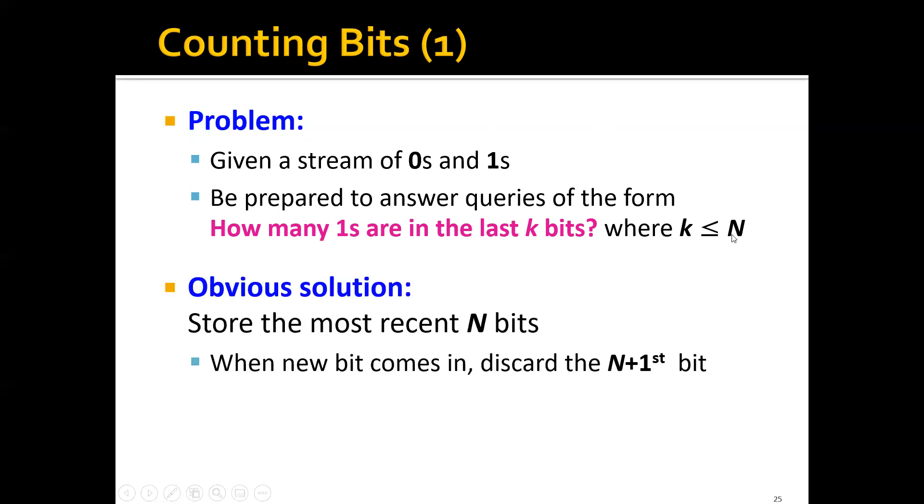The obvious solution is that we can store the most recent N bits. And whenever a new bit comes in, we can discard the N+1st bit. So basically, the sliding window will move as we saw before, and whenever a new bit comes, we will just discard the last bit.